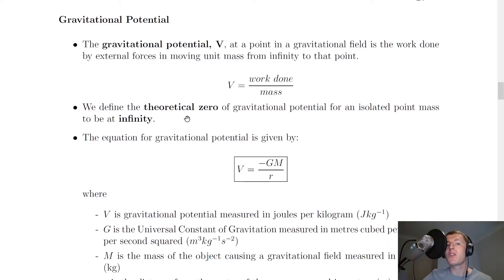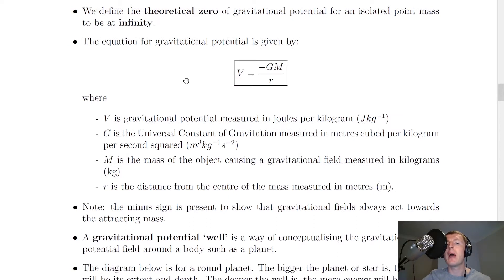Another key point is that we define the theoretical zero of gravitational potential for an isolated point mass to be at infinity. And we have an equation for gravitational potential which says that V is equal to minus G times M over R.